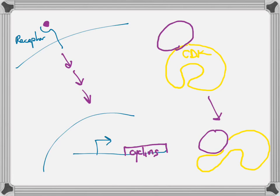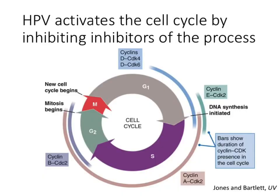A kinase is an enzyme that phosphorylates things. When cyclin D binds to CDK4 or CDK6, it takes the cyclin-dependent kinase from an off to an on state. Now we'll talk about how that on state promotes the transition from G1 into S phase.